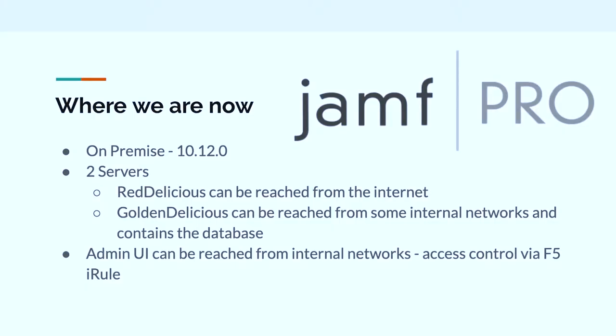We're currently on an on-premise instance at version 10.12 — Jamf seems to push out an update three days after you download the installer. We've got two servers: Red Delicious, reachable from the internet so Macs can check in, and Golden Delicious on the inside where our database is housed. The admin UI is reachable internally through an F5 load balancer with an iRule that says you're only allowed access if you're on a trusted network, so a student can't hit the admin interface from a lab.